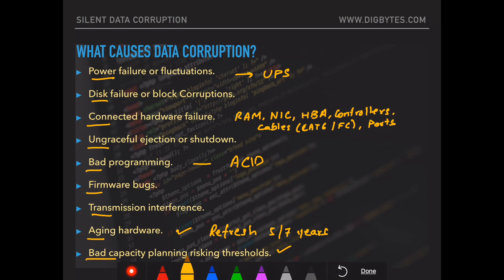Ensure that capacity planning is done keeping in mind the growth factor of the company. If your company is growing at, say, 20 percent per annum, put in some buffer and plan the next hardware purchase accordingly. Most companies would plan for a four-to-five or six-year range. You need to take into consideration the growth factor when buying hardware, or ensure your hardware is scalable.